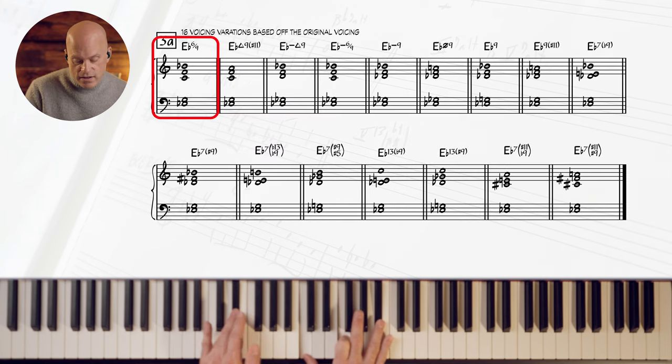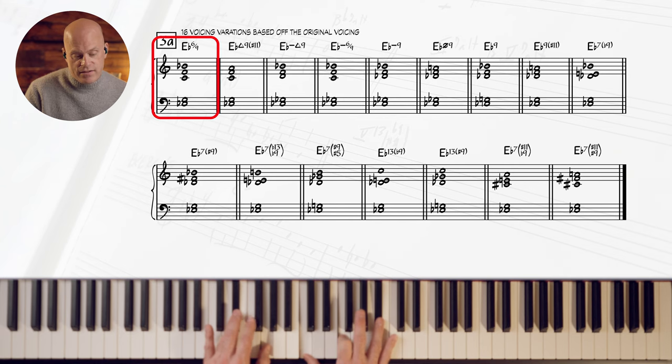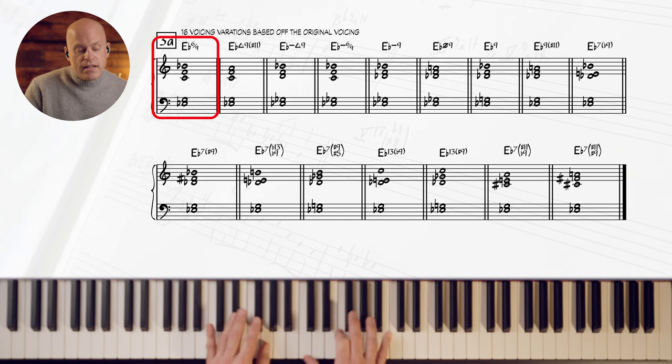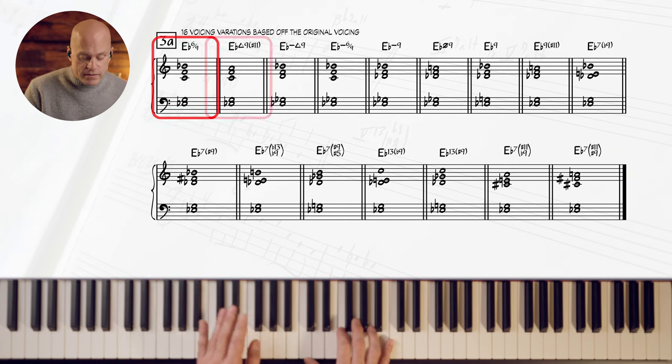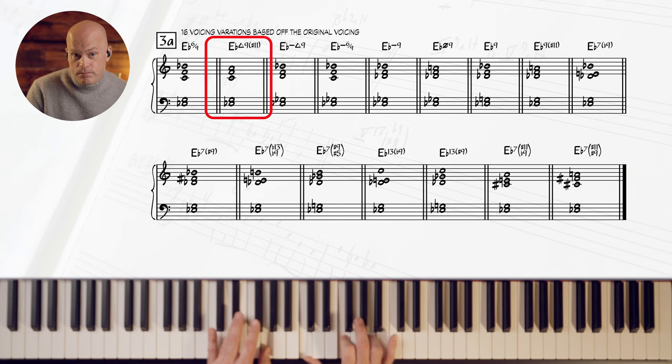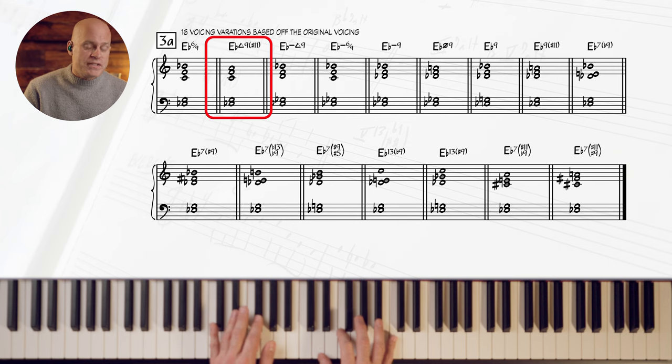E flat six, nine, one, three, six, nine, five. E flat, major nine, sharp 11. I just lowered the fifth. E flat minor major seven. E flat minor nine with a major seven. E flat minor nine.